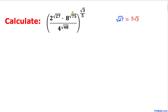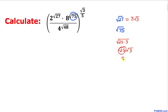Now let's focus on the next exponent: square root of 75. We can write 75 as 25 times 3 under the square root, then break it down as square root of 25 times square root of 3. Square root of 25 is 5, so square root of 75 can be written as 5 times square root of 3.